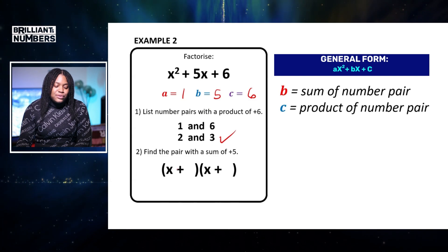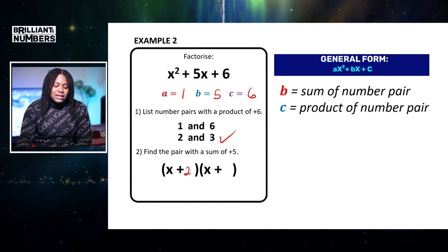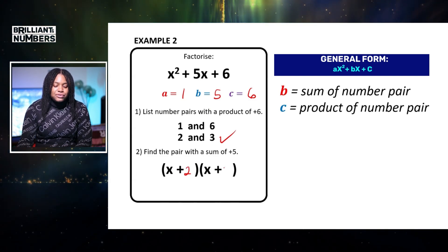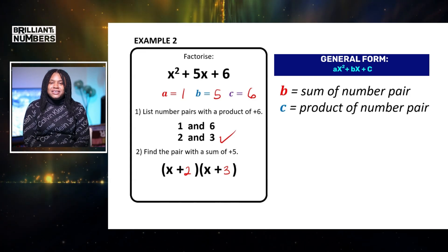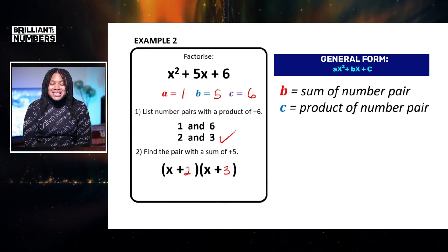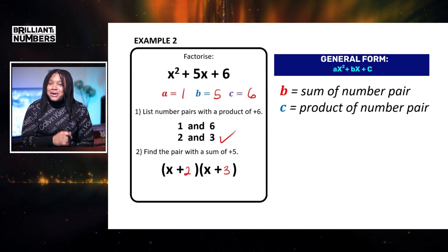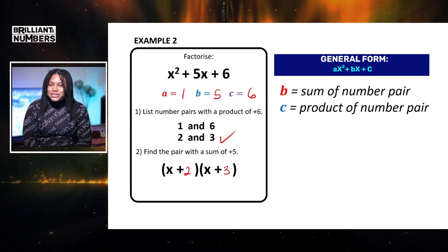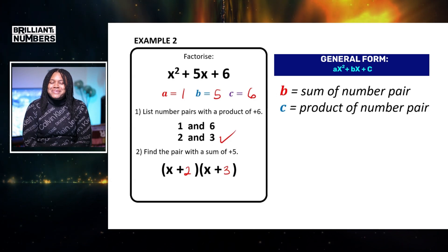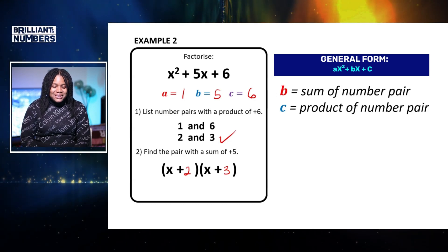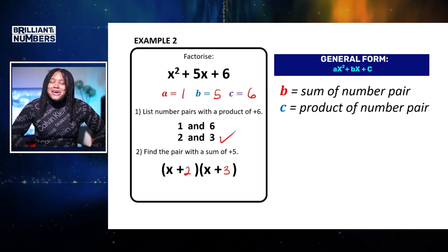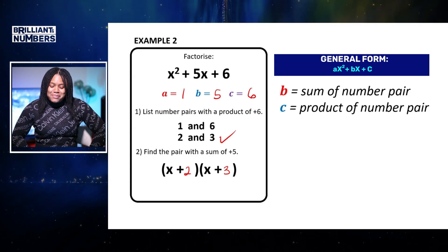So then we're ready to put them in our bracket pair. So x plus 2 and x plus 3. And there we've got it. We've now factorized our second quadratic. And remember, I've told you in the first example how to prove it. So go ahead and try to prove that one. Once you're happy with that, we're now going to go into our third example.